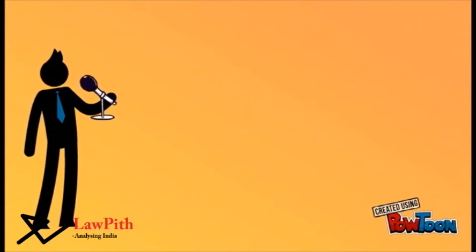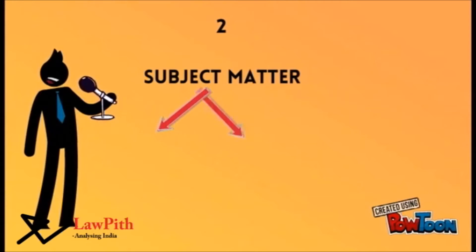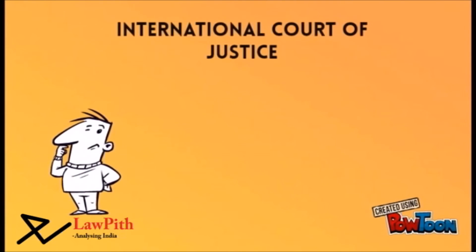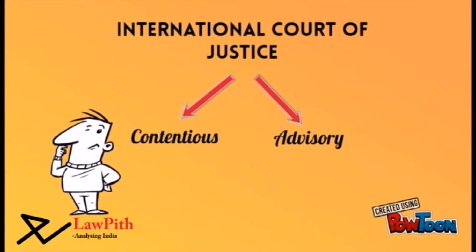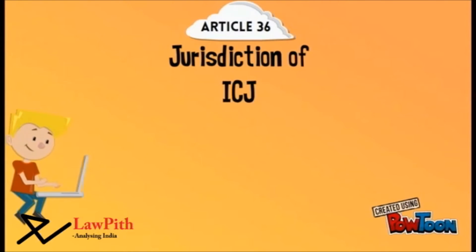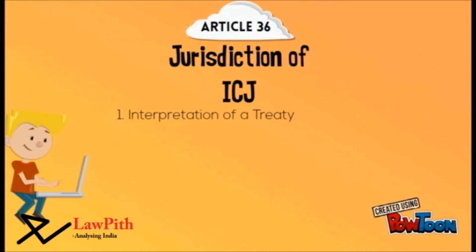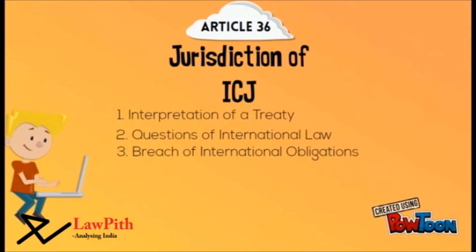The second issue with respect to jurisdiction is the subject matter. Here, we are going to take a look at two major courts: the International Court of Justice and the International Criminal Court. Coming to the ICJ, it has two types of jurisdiction — contentious and advisory. The jurisdiction of the ICJ is defined in chapter 2 of its statute. Article 36 talks about the jurisdiction of the International Court of Justice. It says that the court has jurisdiction over four kinds of matters: 1. Interpretation of a treaty, 2. Questions of international law, 3. Breach of international obligations, and 4. Reparations, their nature and extent.